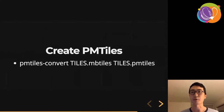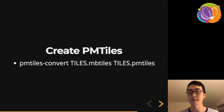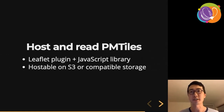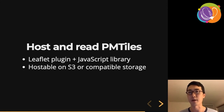To create PMTiles, the preferred way right now is to start with the MBTiles format and use a Python command-line utility called pmtiles-convert in the github.com/protomaps/pmtiles repository — it will pretty quickly convert an MBTiles to a PMTiles. To host and read PMTiles: since it's totally static it can just be uploaded to S3 or another major cloud provider with S3-compatible storage. That same repository also includes a Leaflet plugin and a small JavaScript library for parsing directories and loading image or vector data.